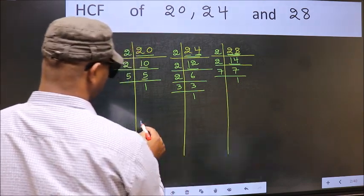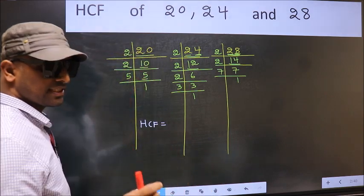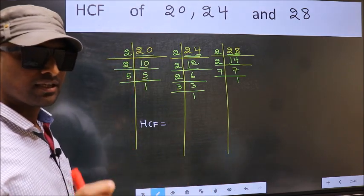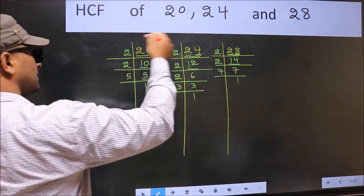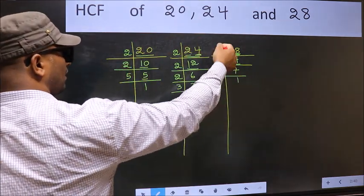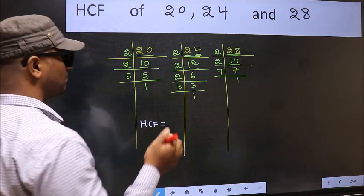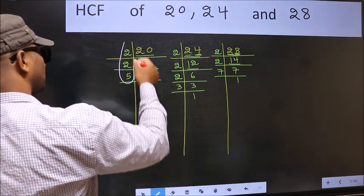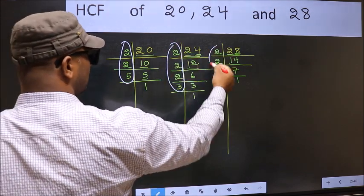So our HCF is the product of numbers which should be present in these 3 places. I repeat, HCF is the product of numbers which should be present here and here and also here.